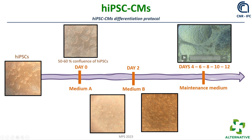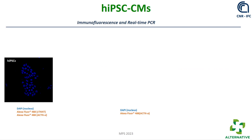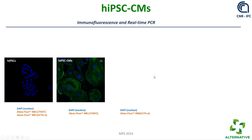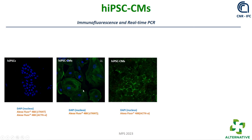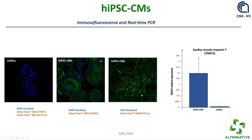At the end of this period, we can observe the cells are beating, as seen in the video. We characterized the cells to confirm they are cardiomyocytes by immunofluorescence, testing cardiac troponin and actinin alpha. In undifferentiated pluripotent cells, troponin is totally absent, while in differentiated cells we observe the presence of cardiac troponin and actinin alpha. We also characterized by real-time PCR, observing a significant increase in relative expression of troponin 2.